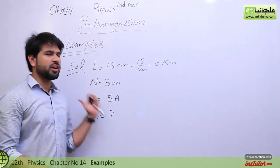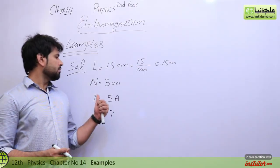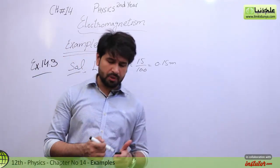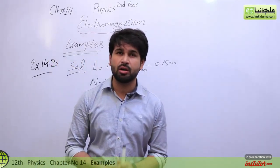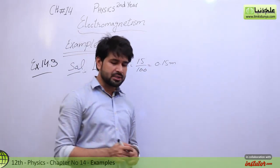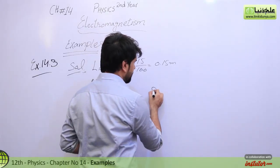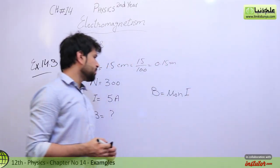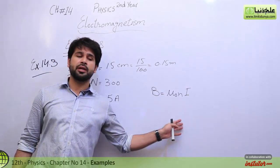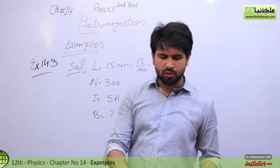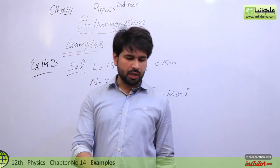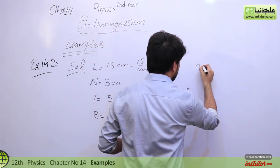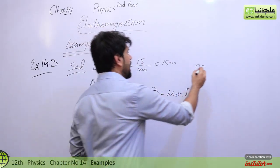We need to find the magnitude of the magnetic field. Looking at which formula is suitable, we use Ampere's circuit law for the magnetic field due to a current-carrying solenoid. The formula involves small n, where small n equals capital N over L — the number of turns per unit length.